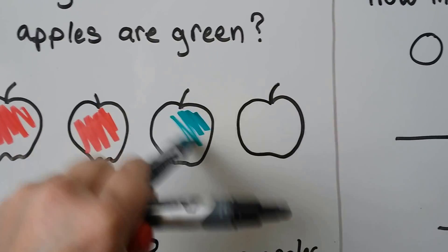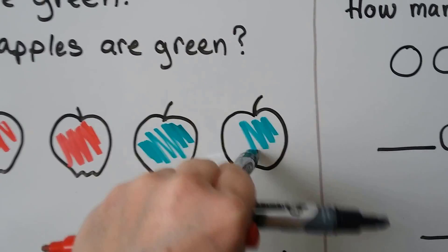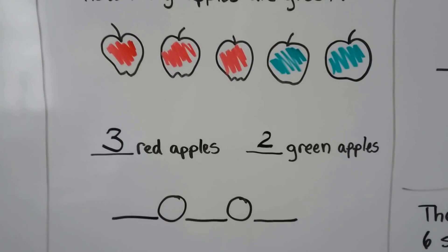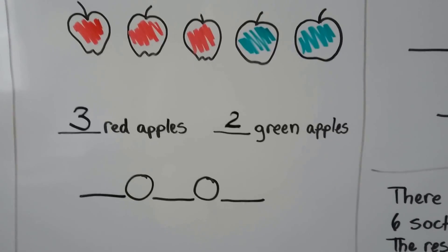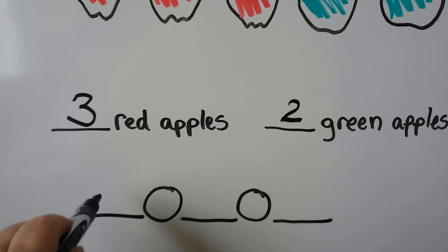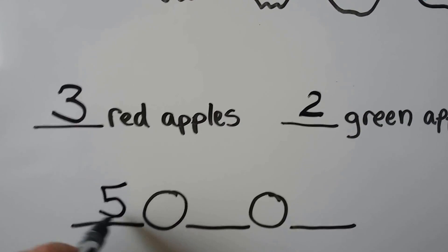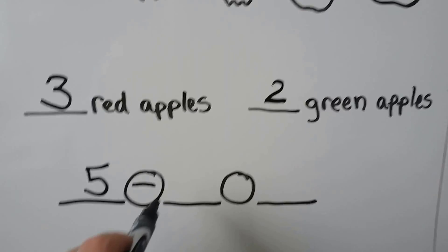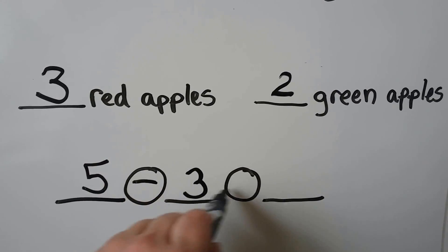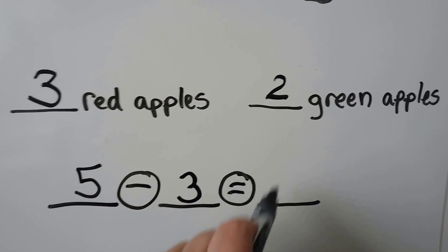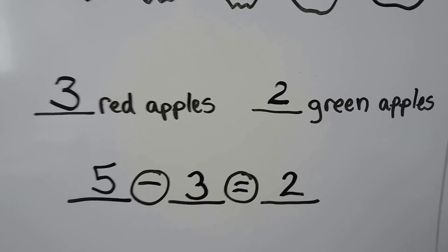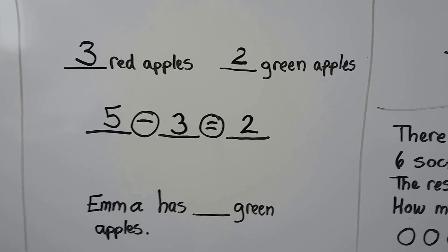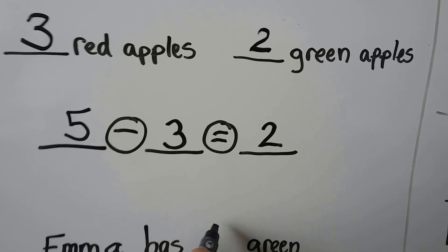Let's color them now. That means if we write a number sentence for this, we have five in all, minus — that means take away — the three red apples, and that will be equal to two green apples. Five minus three is equal to two. Emma has two green apples.